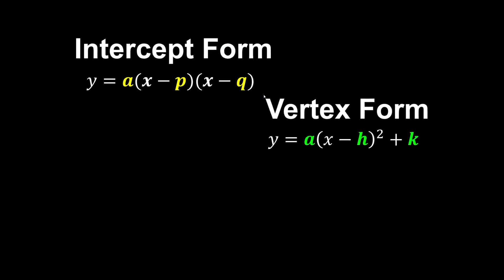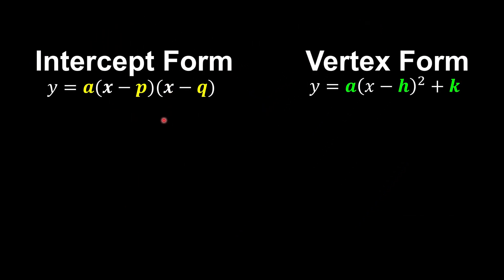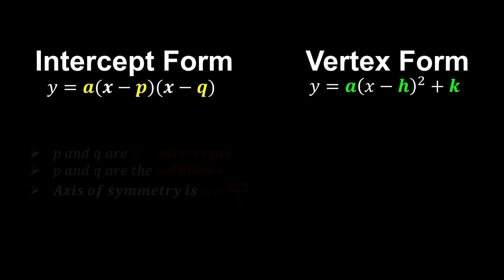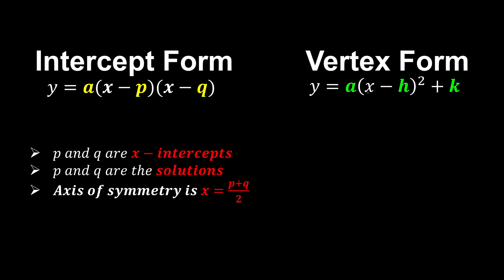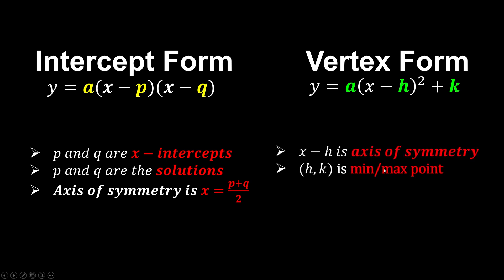Each of the forms has pros and cons. For instance, intercept form tells us the solutions of the equations — p and q are the solutions. Since they are the x-intercepts and symmetrical, the axis of symmetry is the midpoint of p and q. In vertex form, the equation gives the axis of symmetry directly, and h and k are the vertex of the curve, which is the minimum or maximum point.